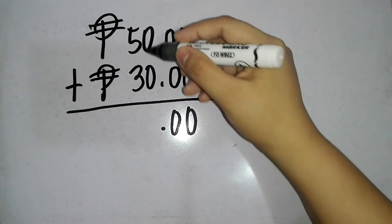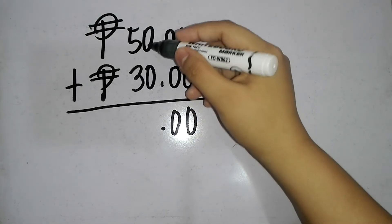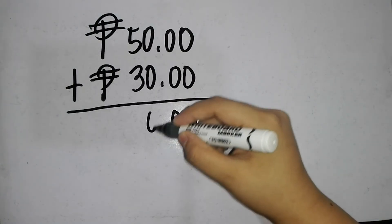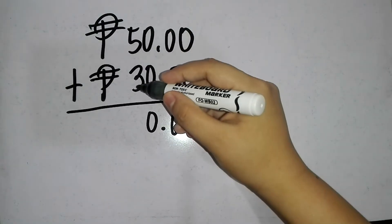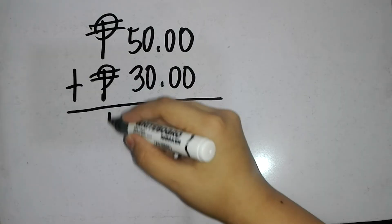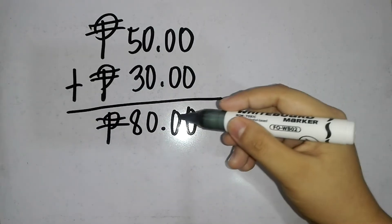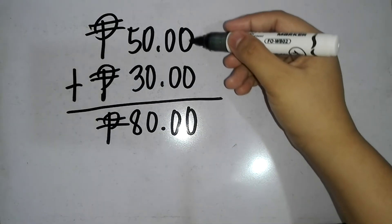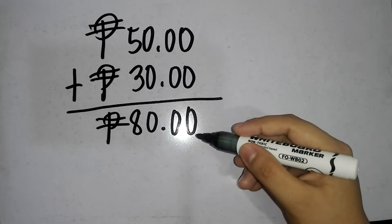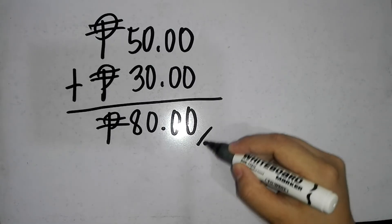Next, let's add the whole numbers. 0 plus 0 is equal to 0. 5 plus 3 is equal to 8. So, 50 pesos plus 30 pesos is equal to 80 pesos.